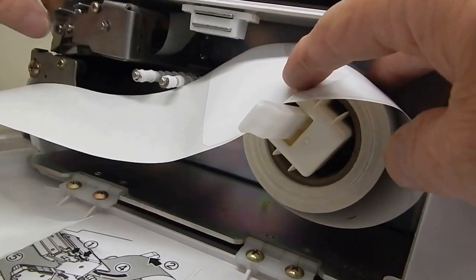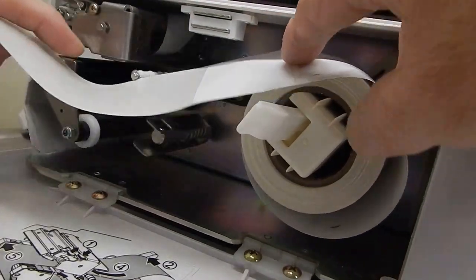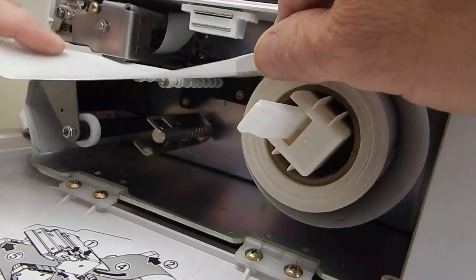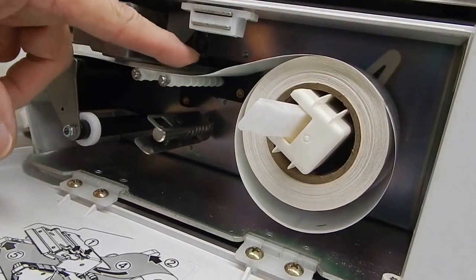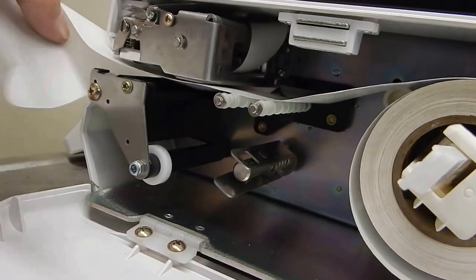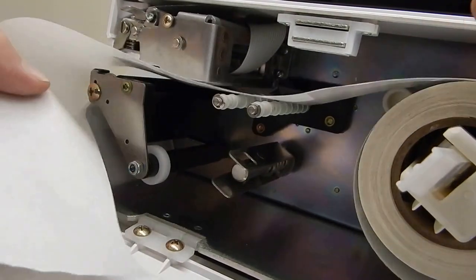Lift the print head. The paper should pass over the two white pins underneath this black plastic pin here and come out the front of the machine.